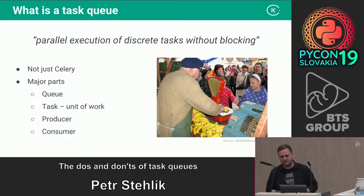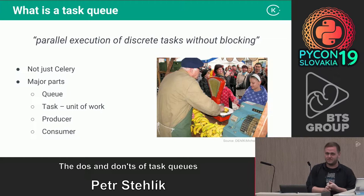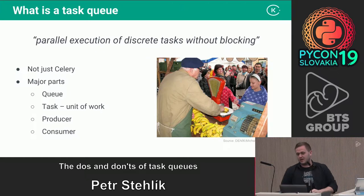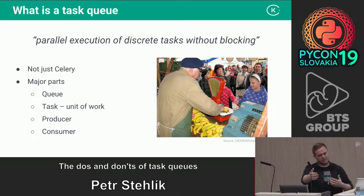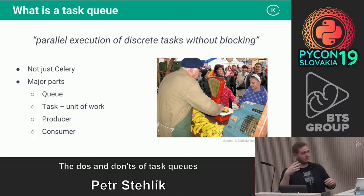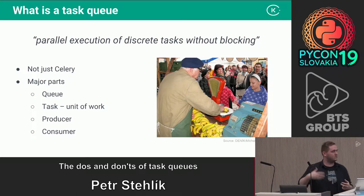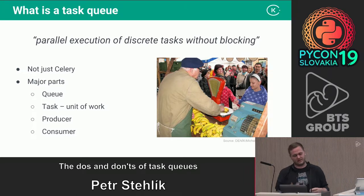Let's get back to the higher level. There are four main parts for a task queue. First is a queue — basically the line where everyone steps in when wanting something. I found a picture depicting this with a queue for bananas. We have the queue, the people waiting. We have the task — the unit of work we want to do, in this case buying a banana. Then the producer that produces the task, and the consumer that is consuming it — the one who wants to buy the banana, and the one selling bananas.